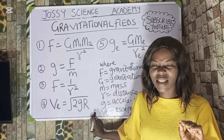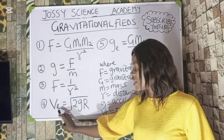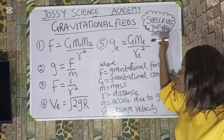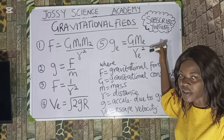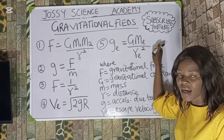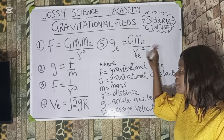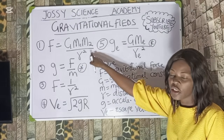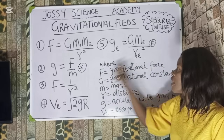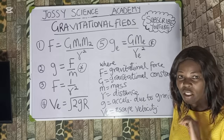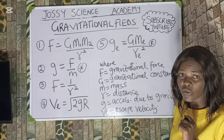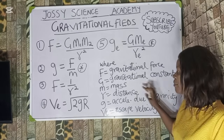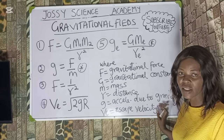The fourth formula is escape velocity: Vₑ equals the root of 2gR. The fifth is the acceleration due to gravity of the Earth: g equals G·Mₑ over Rₑ squared. This applies when you have only one mass and are asked to find the acceleration due to gravity. Key parameters: F is gravitational force, G is gravitational constant, m are masses, R is distance, g is acceleration due to gravity, and Vₑ is escape velocity.